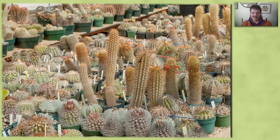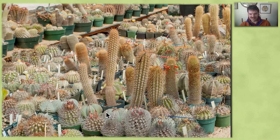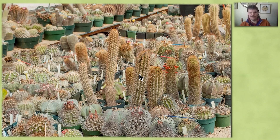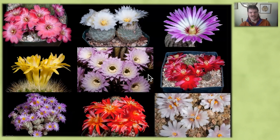We in the cactus and succulent hobby love the variety of exotic forms that these plants can take. In this picture, we've got super spiny Ereocyces in the front. Behind them, we have spineless but flocked Astrophytum myriostigma. Cactus come in columnar shapes, and we also have things like opuntias and epiphyllums, which have totally different growth forms altogether. That's not even to mention the beauty that cactus flowers can have and the variety of colors and forms they come in.